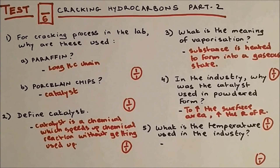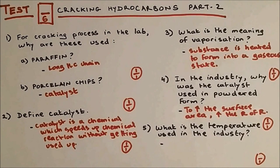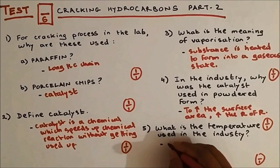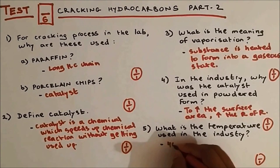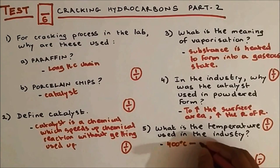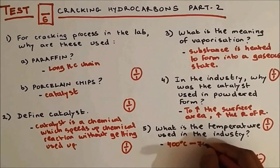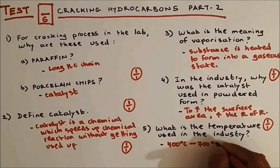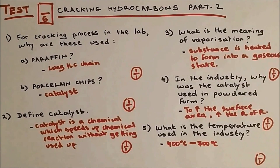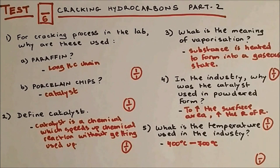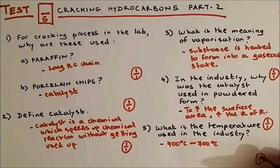Question five: What is the temperature used in the industry? The temperature range is from 400 to 700 degrees Celsius, or you could write 550 degrees Celsius on average. It's one out of one.